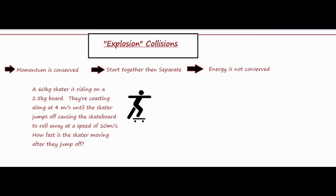We have a 60 kilogram skateboarder riding on a 2.5 kilogram skateboard, coasting along at four meters per second. They're starting together, and then the skater jumps off causing the skateboard to roll away at a speed of 10 meters per second. How fast is the skater moving after they jump off? We're going to set up our pictures, numbers, and vectors, and after we complete the setup we'll do the rest of the calculations.